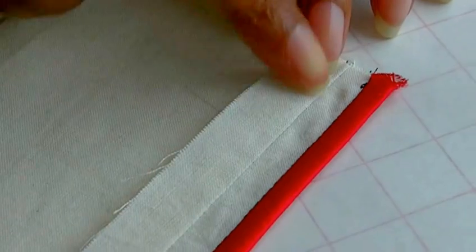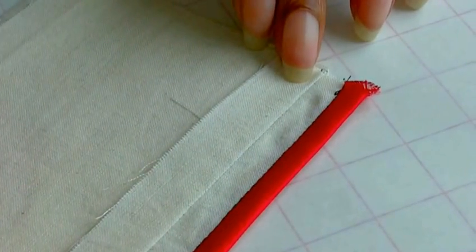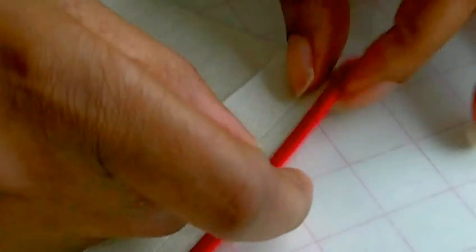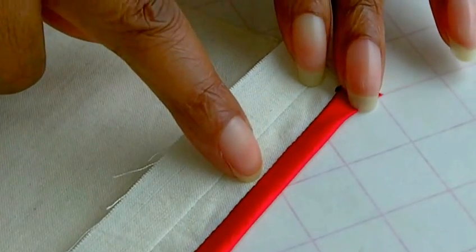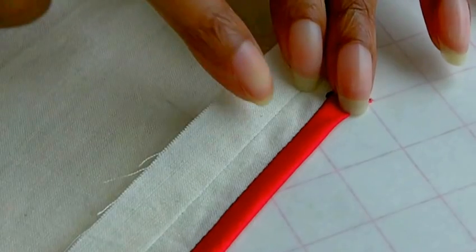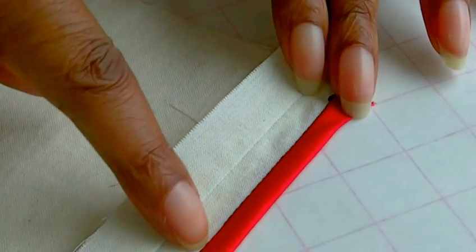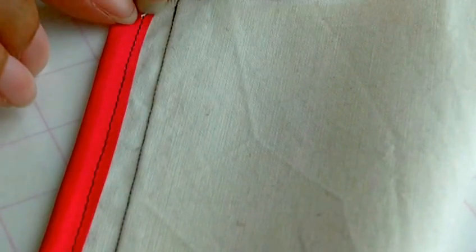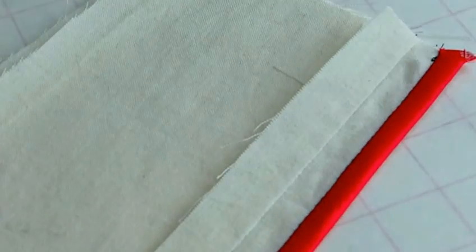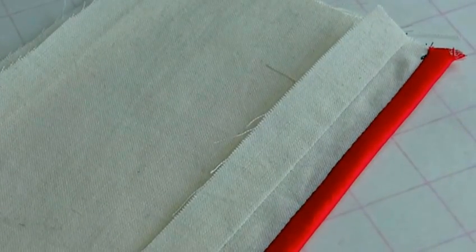Now giving you a close-up shot here, this is the right side of the actual seam and it's now bias bound. You should be able to, or not if it's a matching thread to your sewing fabric, see the row of second stitching, and that second stitching will show on the wrong side as you can see here. That's what you actually need when you do beautiful seams with bias binding.